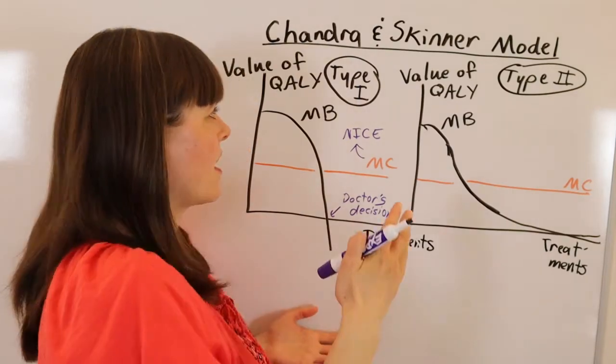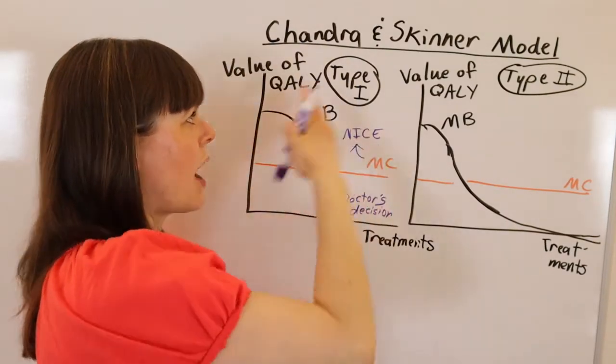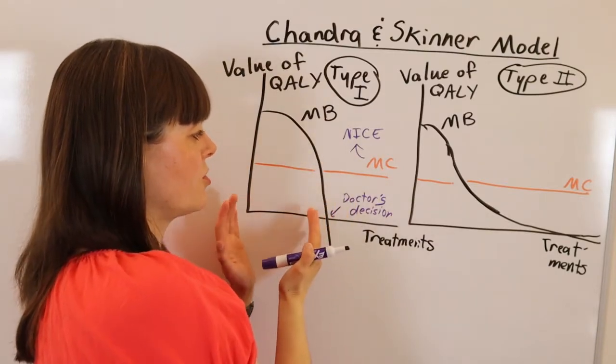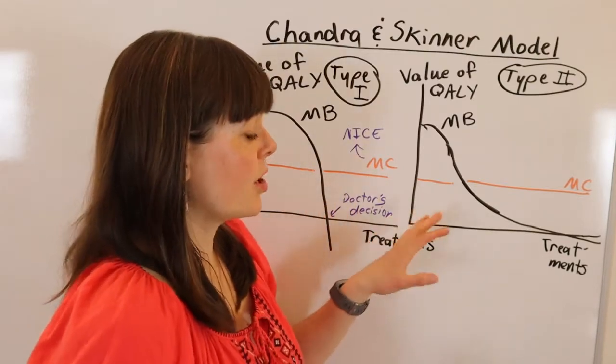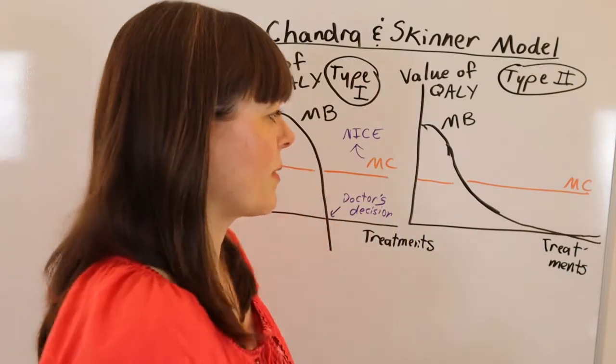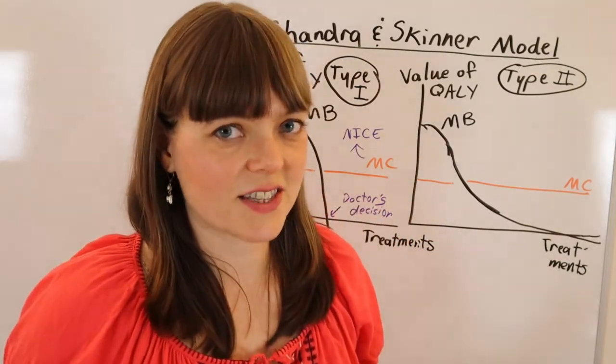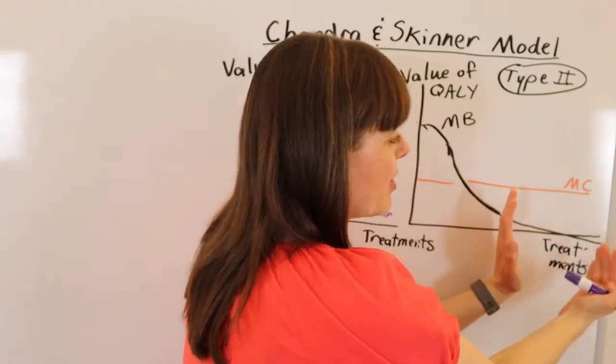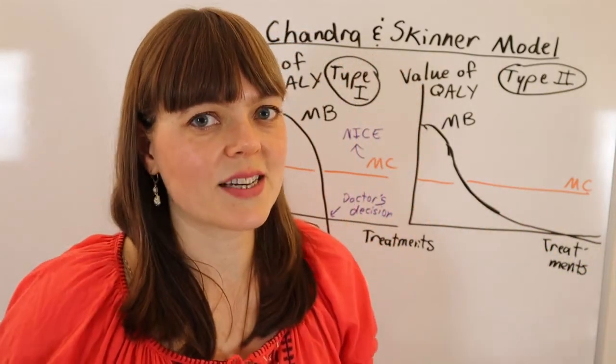So in the UK, there's a lot more incentives to develop and adopt technologies that are type one, that are really beneficial to the people who get them. Whereas in the US, there could be an argument that a lot of the technologies that get adopted into our system are type two. And there's a lot of people getting them who don't really need them.